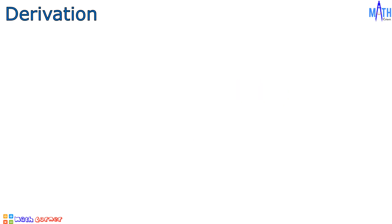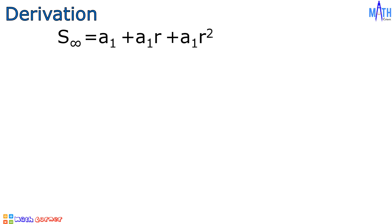Let us derive the formula. If a sub 1 is the first term and r is the common ratio, sum to infinity is equal to a sub 1 plus a sub 1 times r plus a sub 1 times r squared plus a sub 1 times r cubed, and the pattern continues without end.